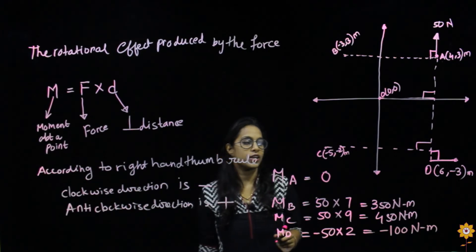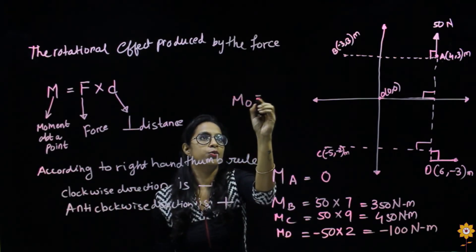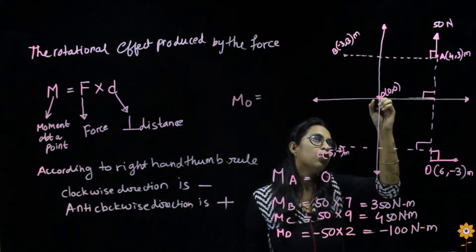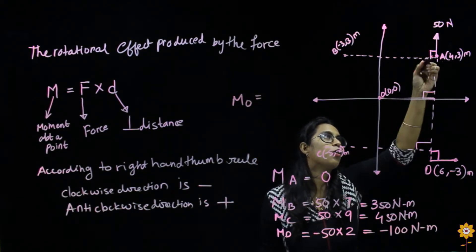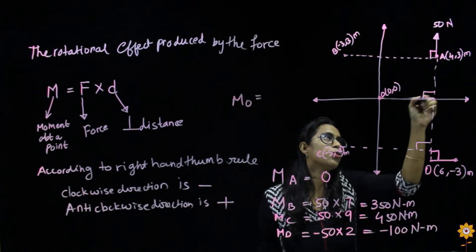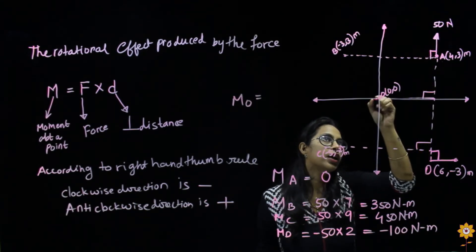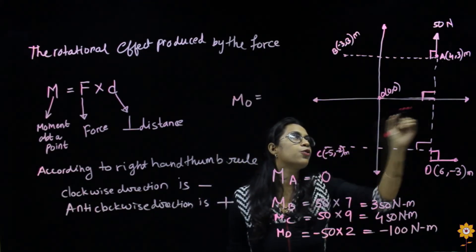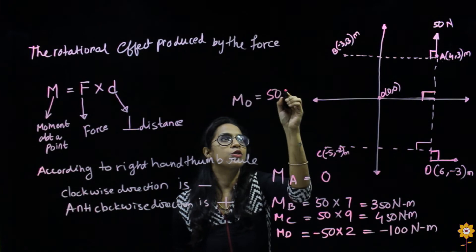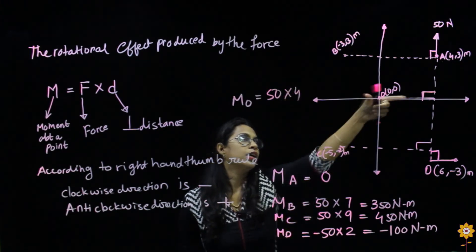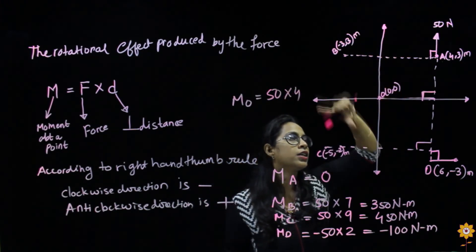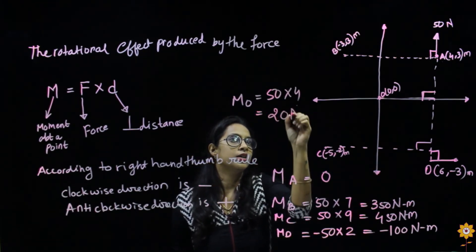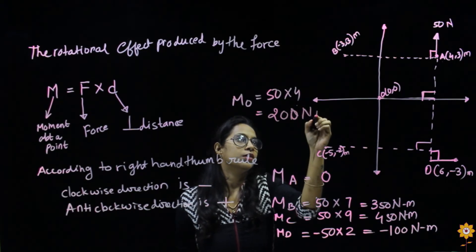The last point is moment about point O. The line of action of the force and point O are perpendicularly related, so the perpendicular distance is 4 and the force is 50. Therefore 50 into 4 — checking the direction, it is anticlockwise again, so positive. The moment about O is 200 newton-meters.